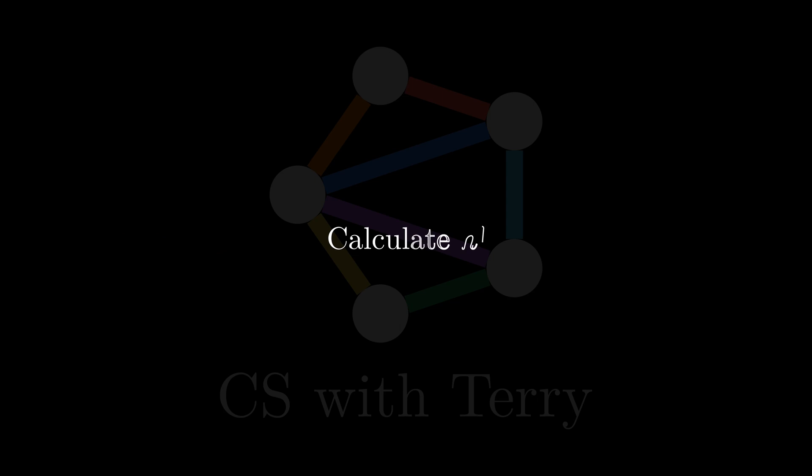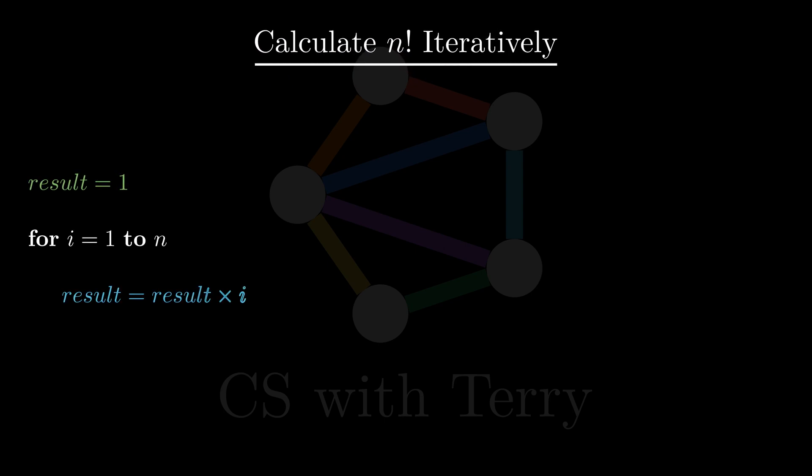Let's take a look at this example first, calculating n factorial. This question is simple, and we can easily solve it iteratively. First, we define a result variable and initialize it to 1, then iterate n times and multiply the result by i each time. The final output is the result of n factorial. Let's recall the way we think about this problem.